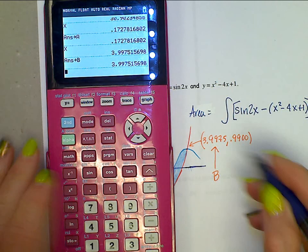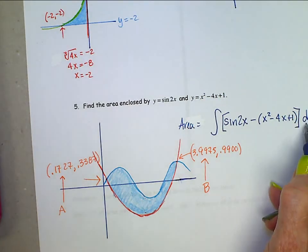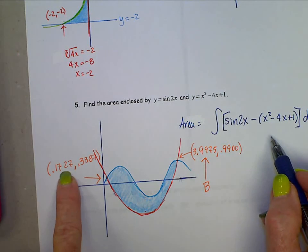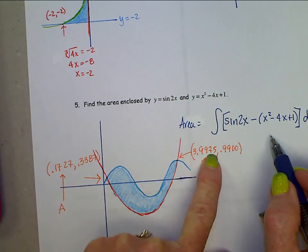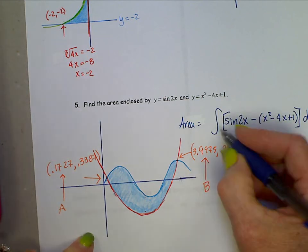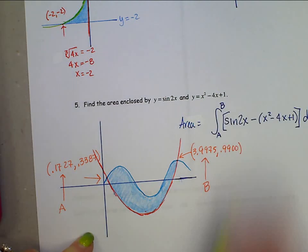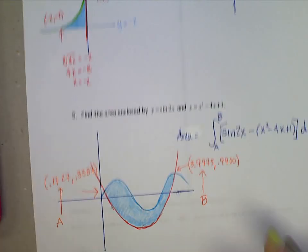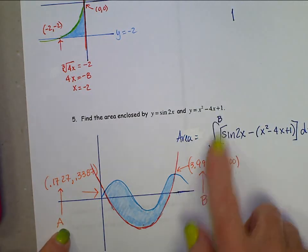So the bounds, then, on this integral would be from this 0.1727 up to this 3.9975. And to avoid the possibility of roundup error, you just put A to B. And as long as you have identified on paper what your A and B stand for, this is perfectly acceptable.